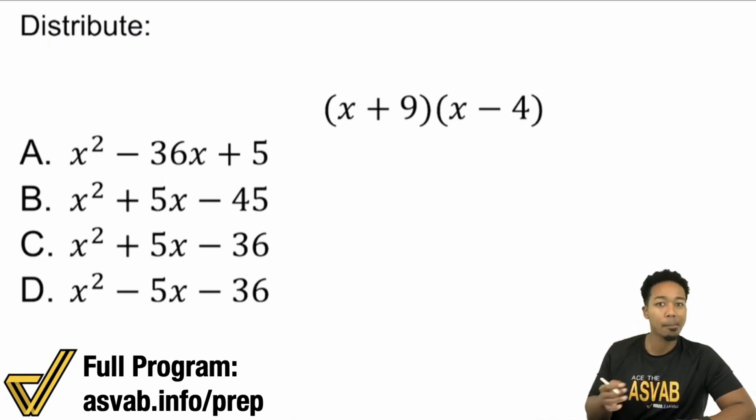Make sure that everything from one parentheses multiplies with everything from the other. As long as you follow that main idea, it doesn't matter if it's 2 by 2, so 2 terms x9, x minus 4, 2 terms. It doesn't matter if it's 2 terms by 2, 3 by 2, 4 by 2, 1 by 5. It doesn't matter. Just make sure that everything from one side multiplies with everything from the other, and you're fine.